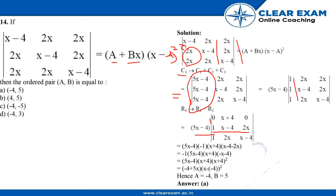In the end we will multiply all the elements: (5x - 4) times (x - 4) times (x - 4) minus 2x. By solving all the equations together we can find out A equals to -4 and B equals to 5, which is the answer number A.